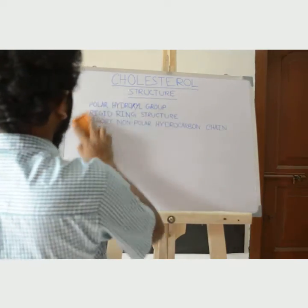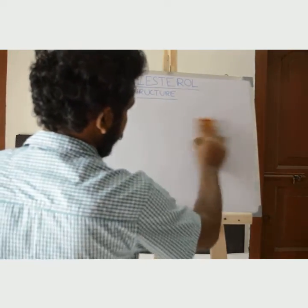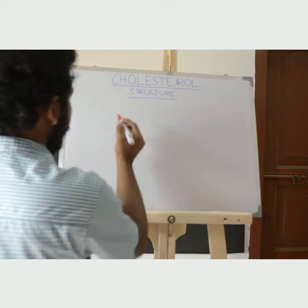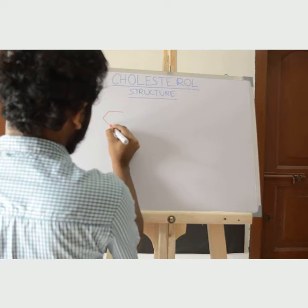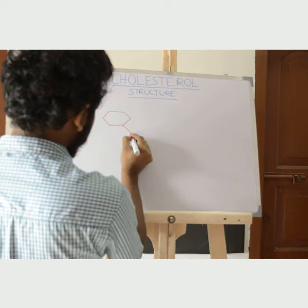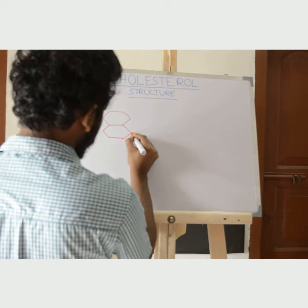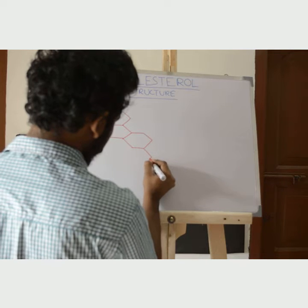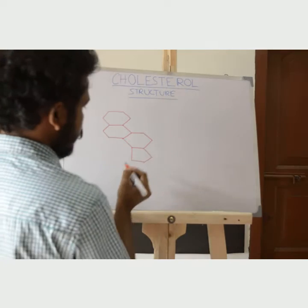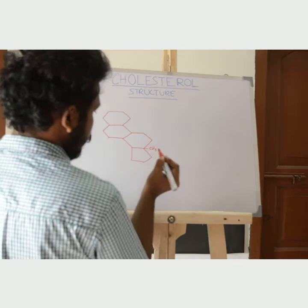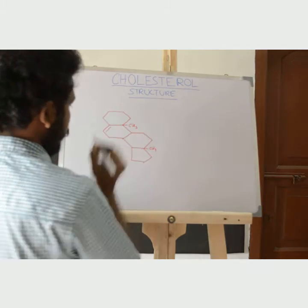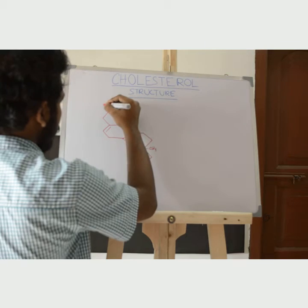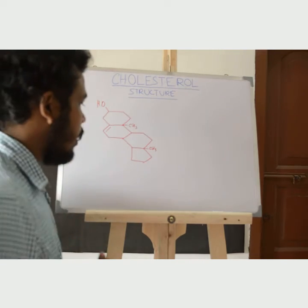First, I draw the rigid ring structure — it looks like this. This is the rigid ring structure of cholesterol, and the polar hydroxyl group is present at this position.